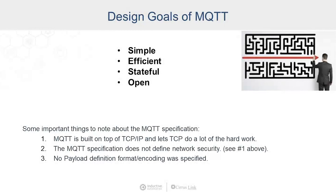The design goals of MQTT were, number one, it had to be simple. Our hardware platforms were 8-bit microprocessors with a maximum of 64 kilobytes of memory, so it had to be deployed on very small embedded systems in the field.